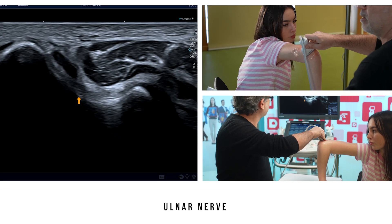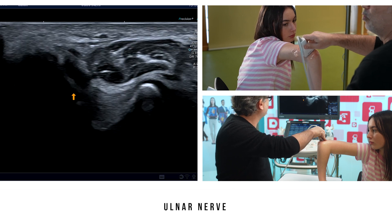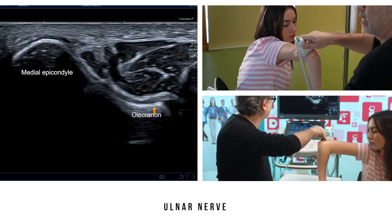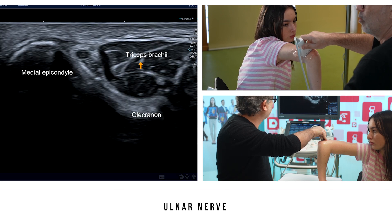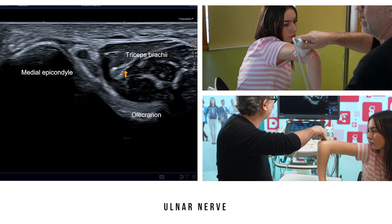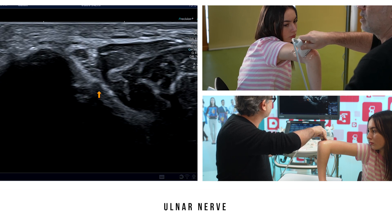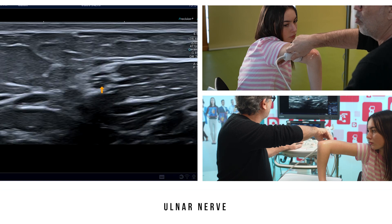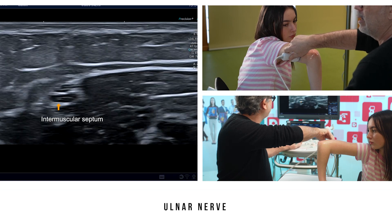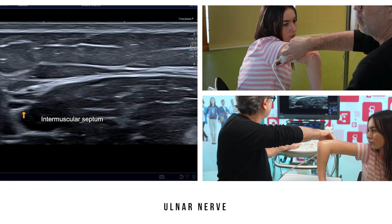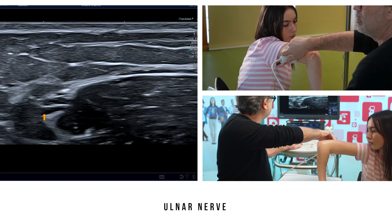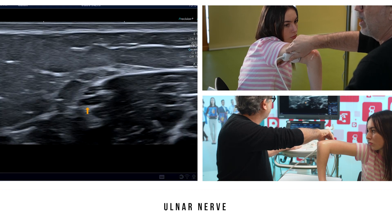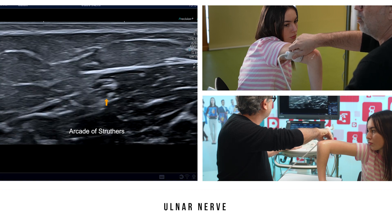The ulnar nerve is analyzed using an axial view at the olecranon fossa. It is interposed between the epicondyle and the olecranon, and closely follows the medial head of the triceps brachii. By using the elevator technique, we can follow it in the arm up to the intermuscular septum. It can be compressed at this level — six to eight centimeters above the olecranon — by a fibrous band called the arcade of Struthers.